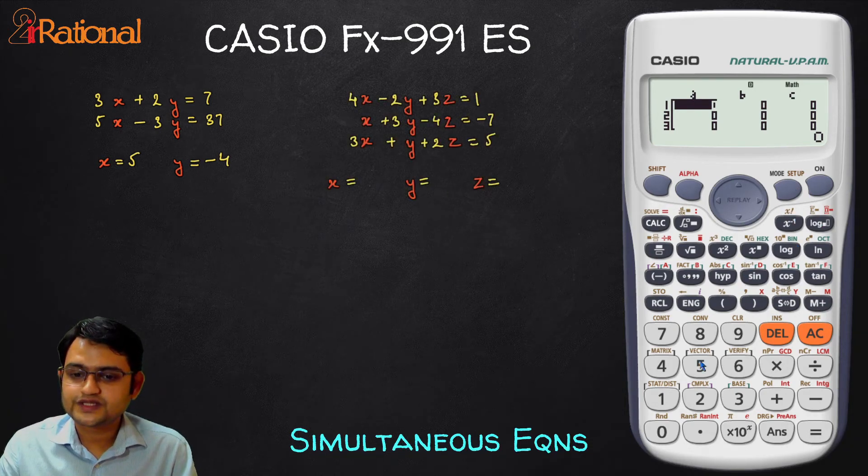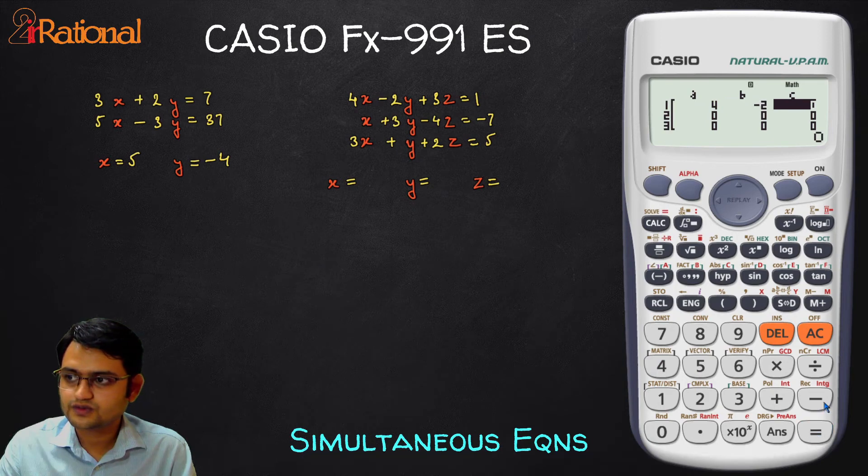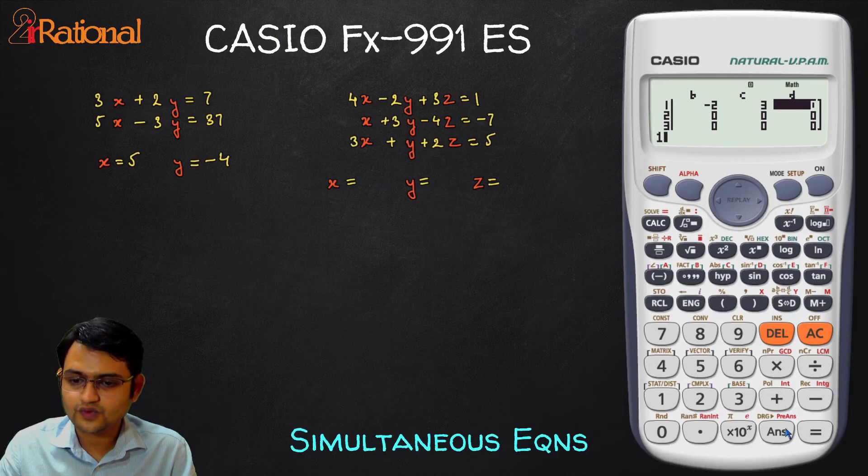So we have three equations. We will substitute all our values. We will say 4, minus 2, and you can see here we have option for d. I will put 1.